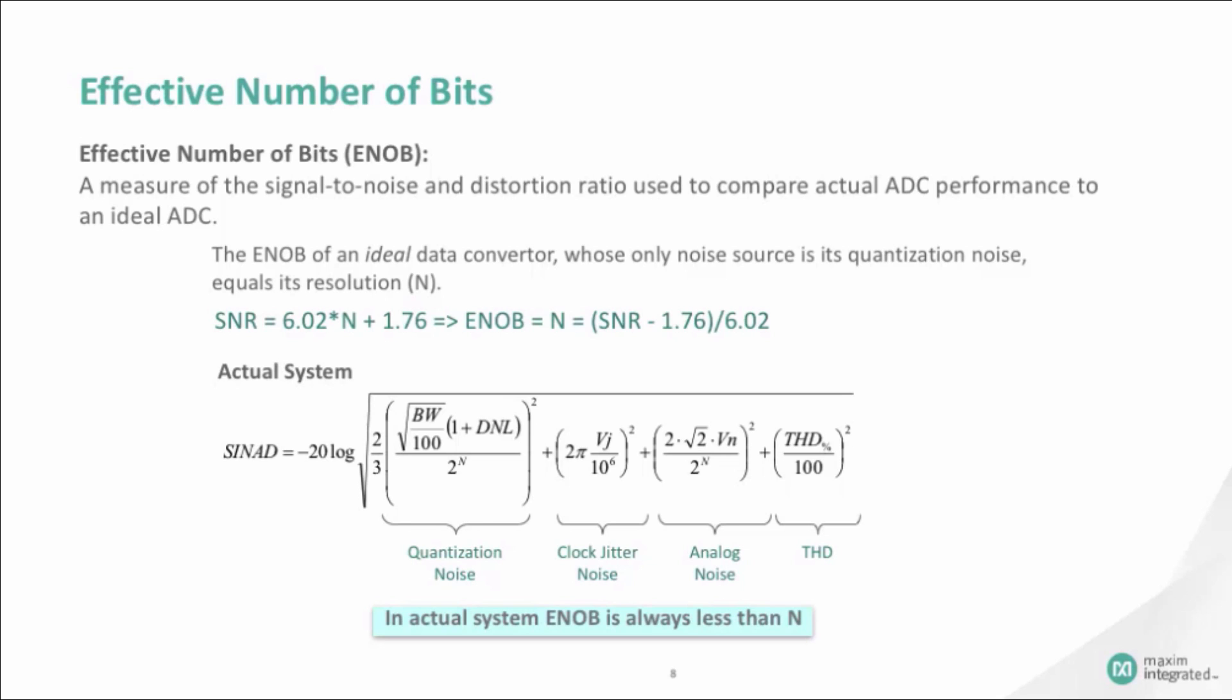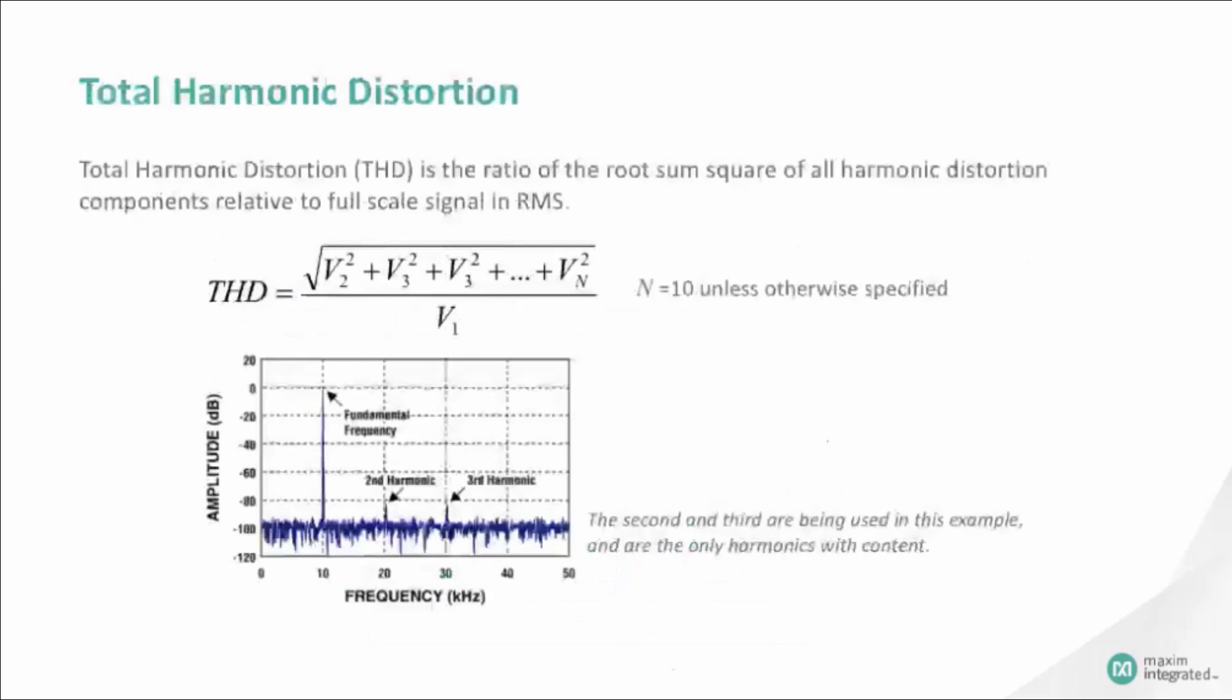Because ENOB should be calculated using the SINAD in place of the SNR in the equation shown here. Total harmonic distortion, THD, is the ratio of the root sum square of all harmonic distortion components relative to full-scale signal, in RMS. Practically, people use the sum of the first ten harmonics as the total.